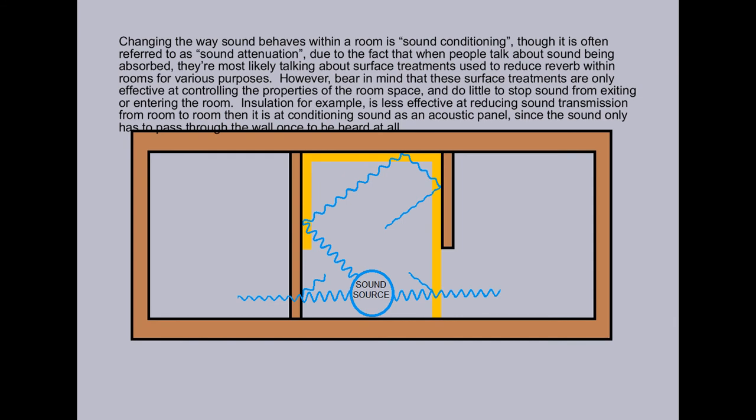Changing the way sound behaves within a room is sound conditioning, though it's often referred to as sound attenuation due to the fact that when people talk about sound being absorbed, they're most likely talking about surface treatments used to reduce reverb within rooms for various purposes. However, bear in mind that these surface treatments are only effective at controlling the properties of the room space and do little to stop sound from exiting or entering the room.